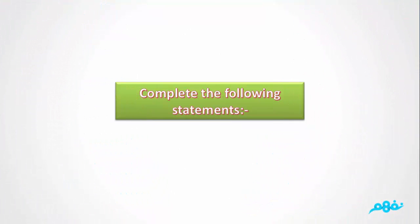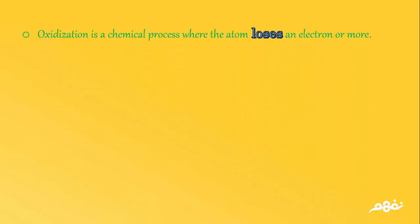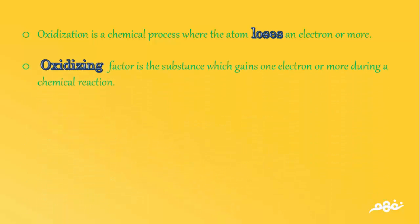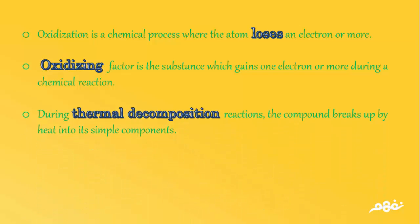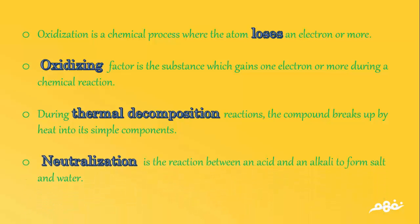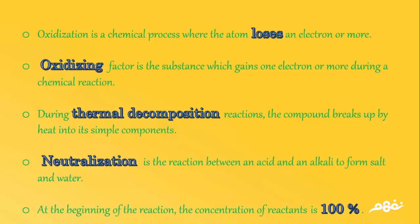Question 2: Complete the following statements. Number 1: Oxidization is a chemical process where the atom loses an electron or more. Number 2: Oxidizing factor is the substance which gains one electron or more during a chemical reaction. Number 3: During thermal decomposition reactions, the compound breaks up by heat into its simple components. Number 4: Neutralization is the reaction between an acid and an alkali to form salt and water. Number 5: At the beginning of the reaction, the concentration of reactants is 100%.